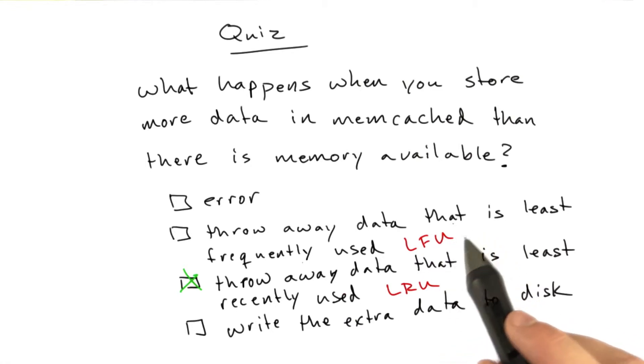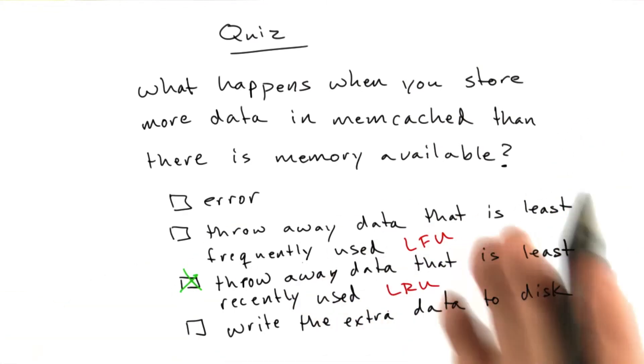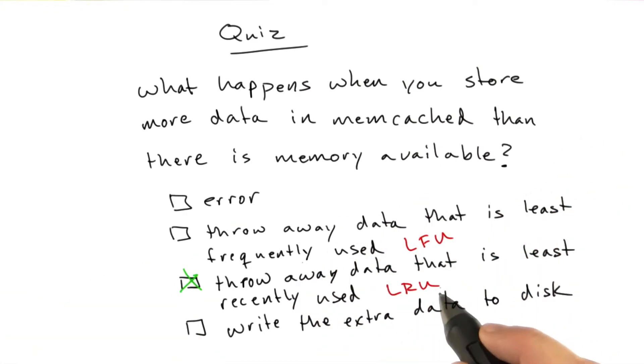Least frequently used implies some notion of keeping track of how many times each key is accessed. It's a little bit harder to implement than least recently used, which is just a simple sort. Just throw the key to the front, add the key to the front of the list.